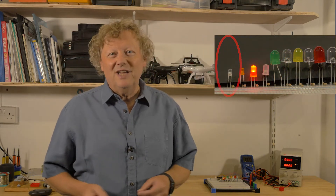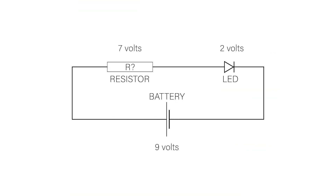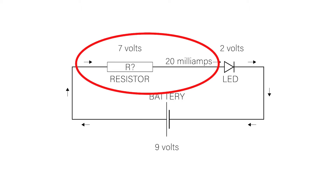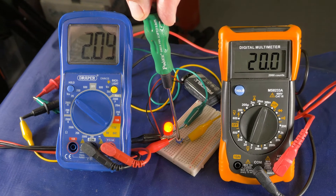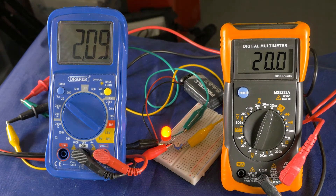In this video I'm going to look at how to set up LEDs with suitable current limiting resistors. For choosing resistors I'll do one simple calculation without a lot of maths or theory, and I'll also look at how to measure the current and voltage in an LED circuit.